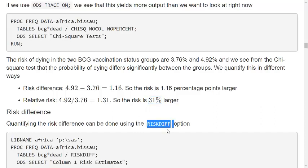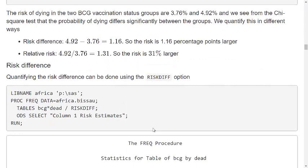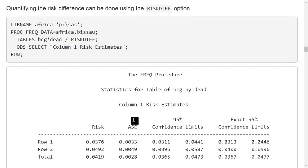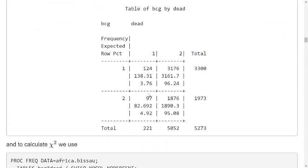So if I want to calculate the risk difference, I use the risk diff option. It happens like this and here again I can use the trace on option to see the names of all the different parts of the output. I can see that I have to write ODS select column 1 risk estimates. Why column 1? If you go up and look at the table again here is column 1, that's the dead children, so this is the risk we are interested in.